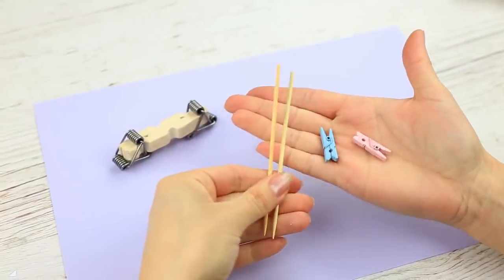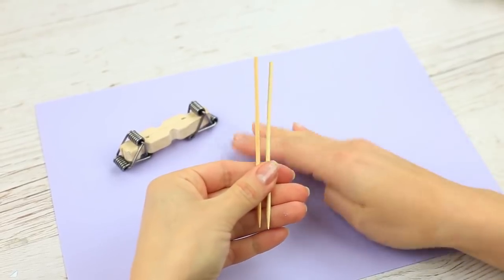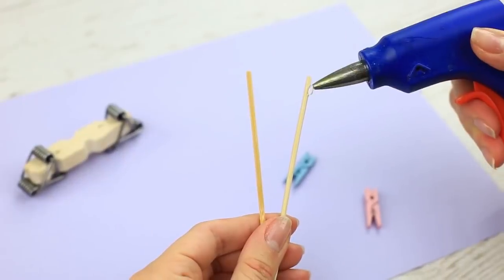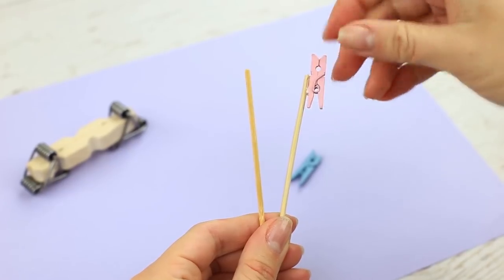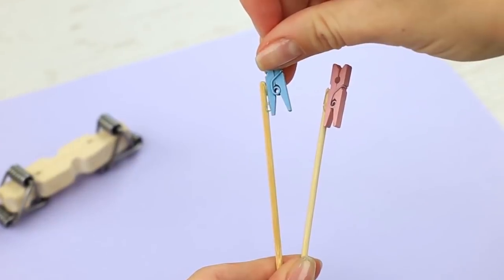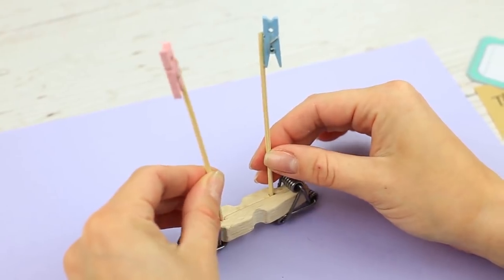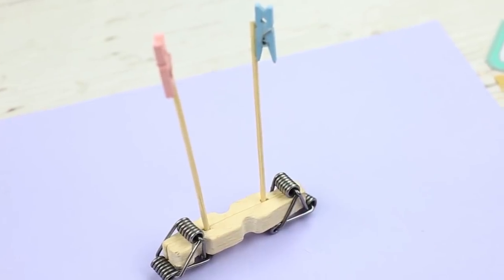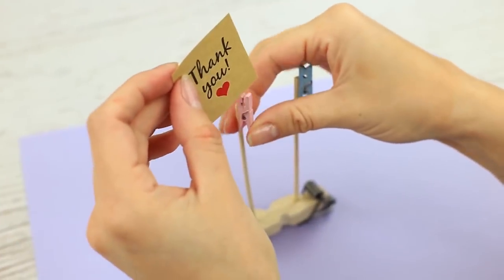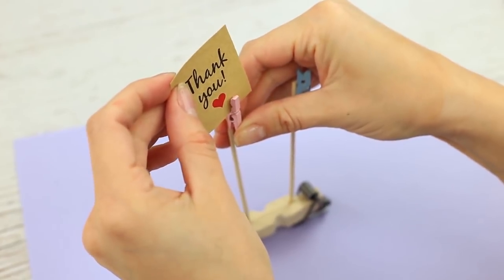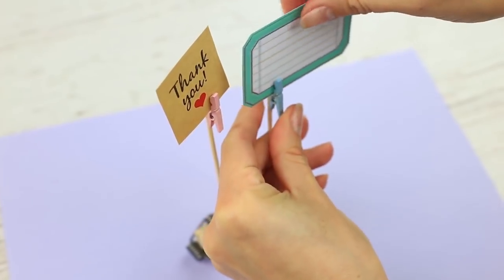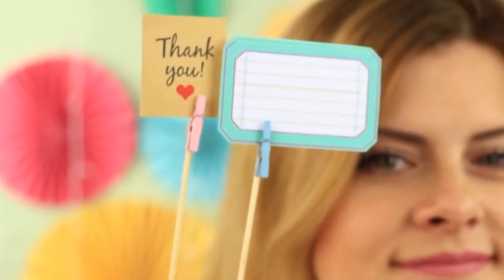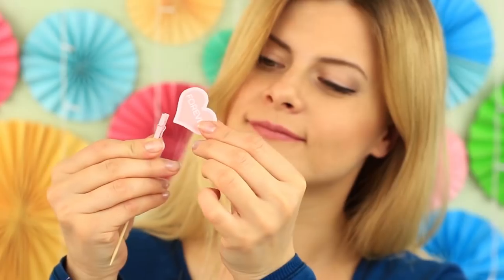Take two short wooden skewers and a couple of mini clothespins. Hot glue the skewers and pins. Put them in the pin notches. Attach the note tags. The light and suitable note holder will help organize your schedule.